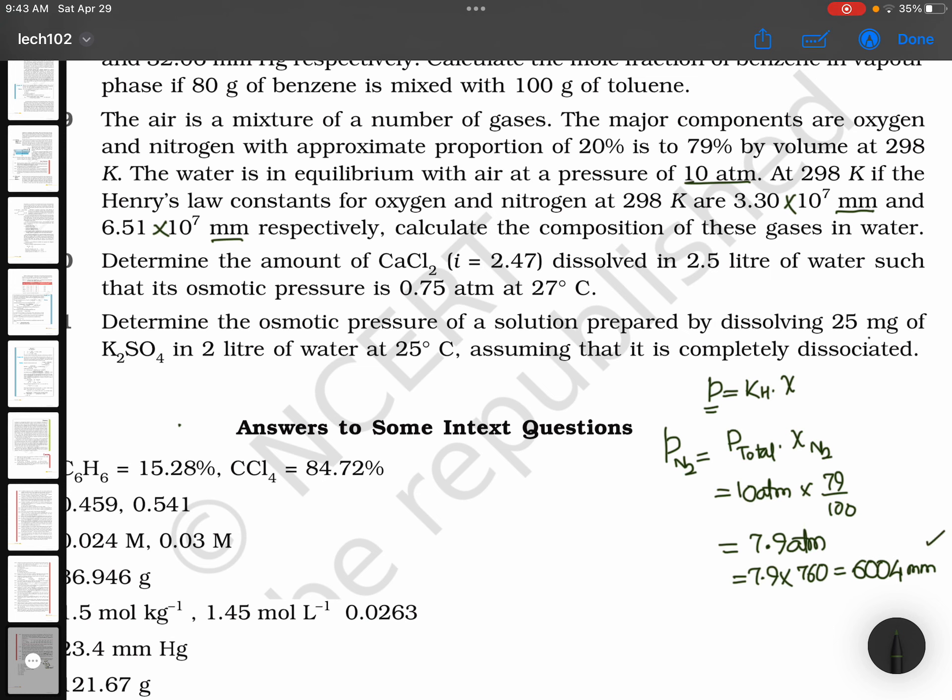Now, if you want the mole fraction, mole fraction equals P by KH. That's 6,004 divided by its value. The Henry's constant for nitrogen is 6.51×10^7 millimeters, so this equals 9.22×10^-5.